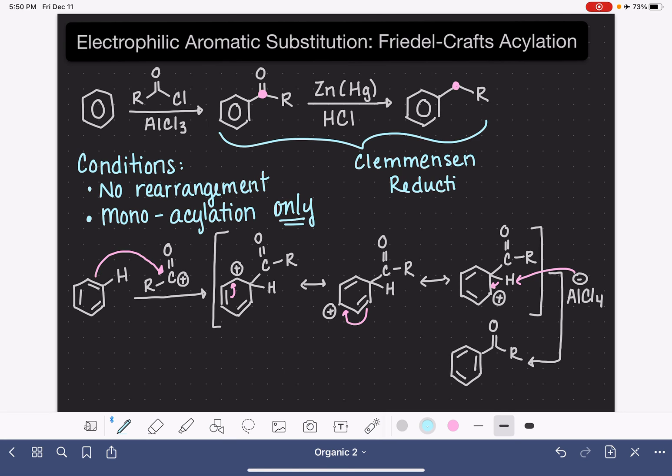And in terms of adding an alkyl group to a benzene ring, this two-step process is definitely the best way to go because it allows you to have full control over the actual alkyl group that's being put on the benzene ring.